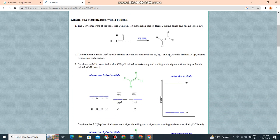Between sp2 hybridization with pi bonds, the linear structure of the molecule C2H4 is shown below. Each carbon forms three sigma bonds and has no lone pairs.